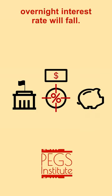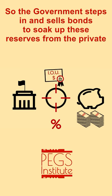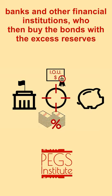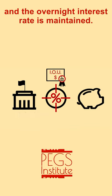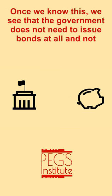the overnight interest rate will fall. So the government steps in and sells bonds to soak up these reserves from the private banks and other financial institutions, who then buy the bonds with the excess reserves, and the overnight interest rate is maintained. Once we know this, we see that the government does not need to issue bonds at all,